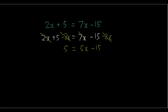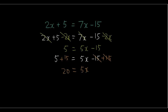We've moved all the x's to the right. Now let's move all the numbers to the left by adding 15 on both sides. Minus 15 plus 15 cancel each other out, and we're left with 5x equals 20. Remember, you can do whatever you want as long as you do it to both sides. Now let's divide both sides by 5, and we get x equals 20 divided by 5, which is 4.